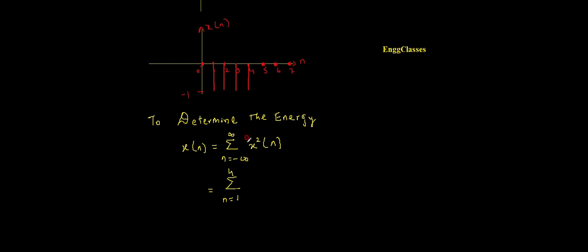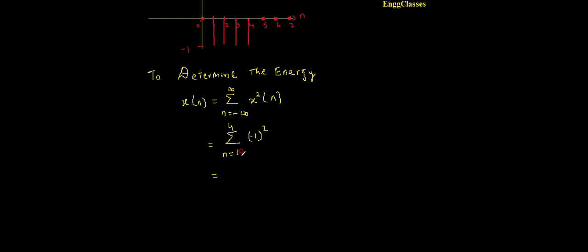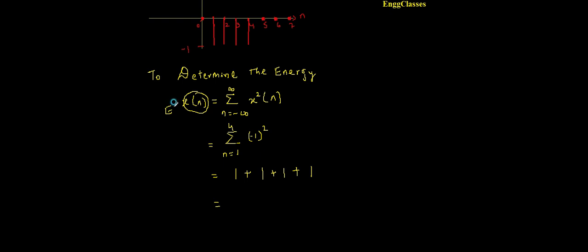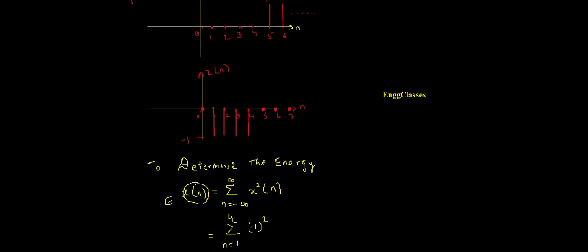The value of x of n is minus 1, so I need to compute minus 1 squared. At position 1 this is minus 1 squared, which is 1. Similarly for n equal to 2, 3, and 4, I get minus 1 squared each time. Adding these four terms — minus 1 squared four times — gives an energy equal to 4 joules.